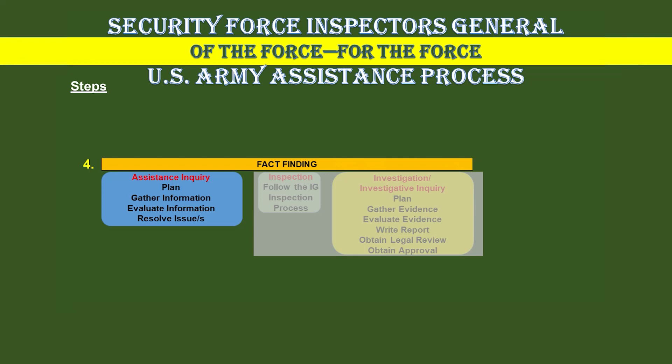The IG will use the assistance inquiry to address or respond to a complaint involving issues, requests for assistance, or requests for information, but not allegations of impropriety or wrongdoing. During the assistance inquiry, the IG typically gathers information by reviewing applicable policies and standards, or by requesting documentation and additional information from the complainant, from the command, or from other agencies within DOD to resolve the issues. It complements the inspections and investigations function of the IG system. However, if an IG determines that an Inspector General inspection, investigative inquiry, or investigation is necessary, he or she must first obtain authority from the directing authority, usually the commanding general.